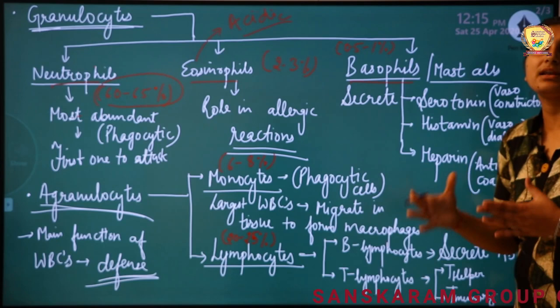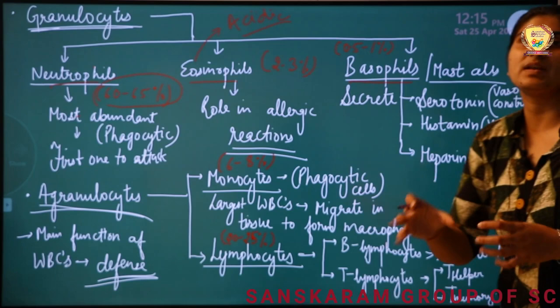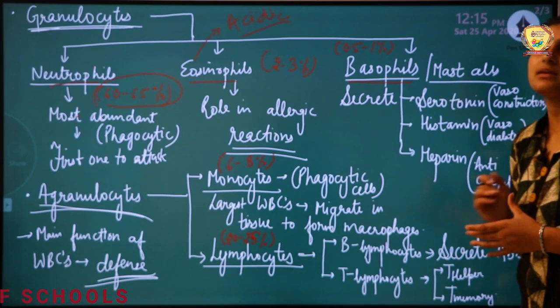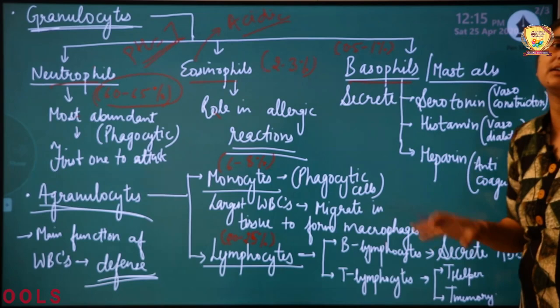So here, neutral, acidic, and basic refer to the dye used for staining. When we visualize a cell under the microscope, we stain that cell. Neutrophils get stained with a neutral dye — the pH should be 7, meaning it must be neutral. Eosinophils get stained with an acidic dye, and basophils with a basic dye.